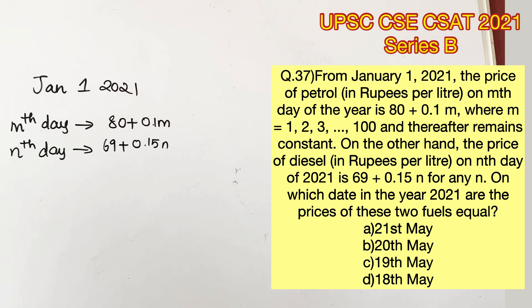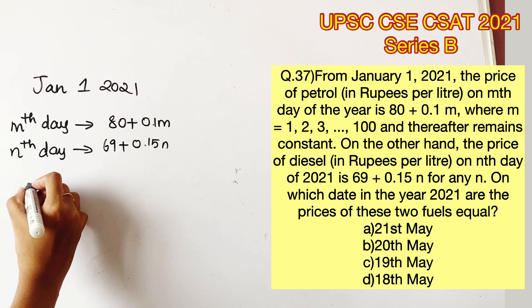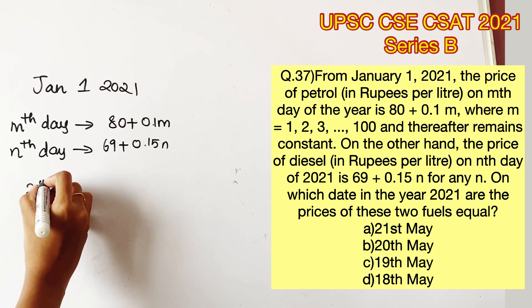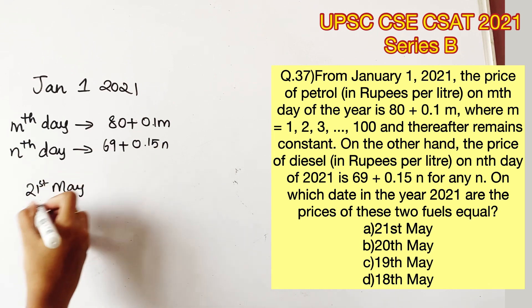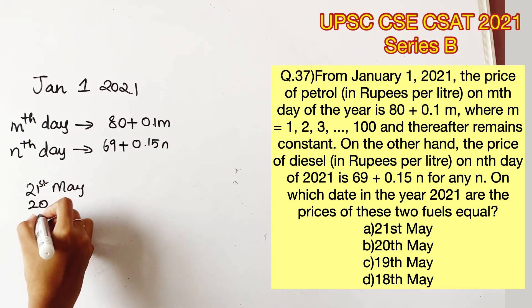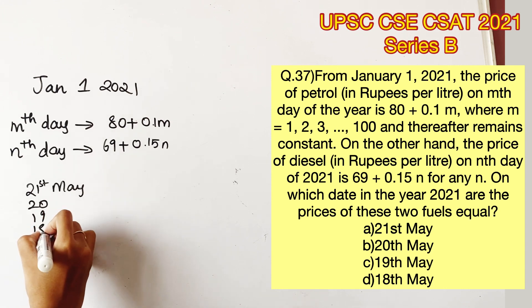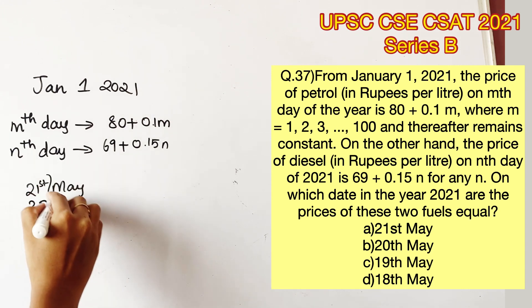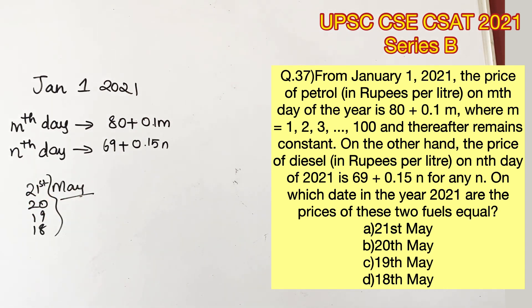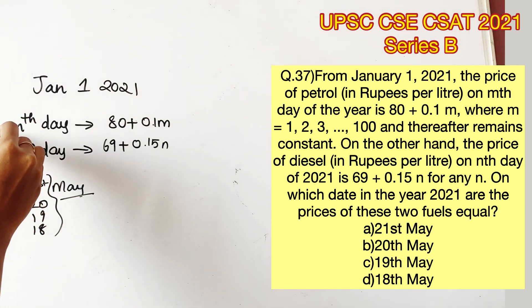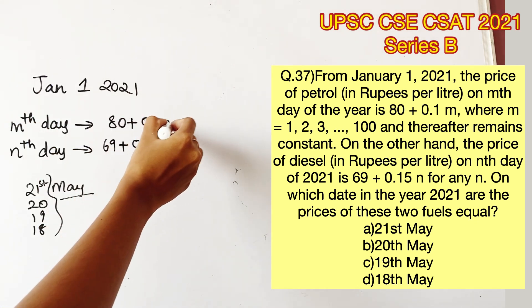For diesel, n is not constant at any point — it keeps varying for each day. We are supposed to find on which day both of these prices are equal. Looking at the options, they range from 18th May to 21st May. Since m is constant after the 100th day, any day in the month of May will be greater than the 100th day.